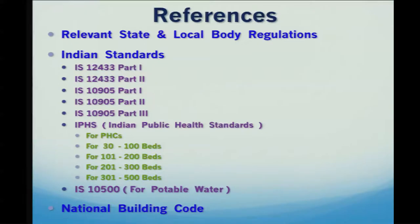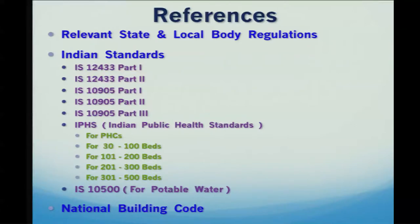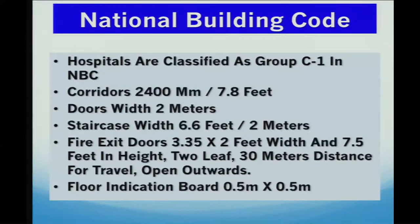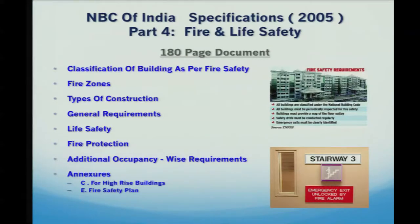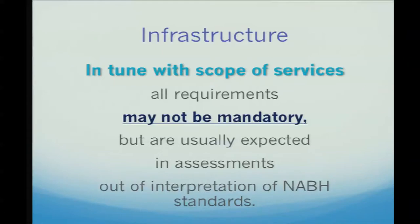References for infrastructure standards include: health being a state subject in India, so state regulations play a major role; the IPHS (Indian Public Health Standards), which classifies by number of beds and is freely available online; and the National Building Code, which classifies hospitals as Group C1. NABH assessors don't come with a scale — just follow the National Building Code. Your architect or engineer will help. Fire safety is also an important aspect, including fire zones, type of construction, life safety, and occupancy-wise requirements. Infrastructure must be in tune with your scope of services.